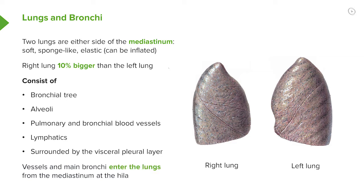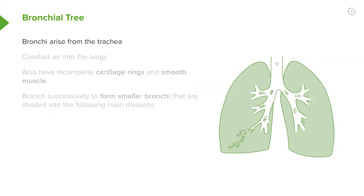All the vessels and all the bronchi — the right and the left main bronchi — enter the lung through what we call a hilum. These are gaps in the visceral pleura which are very medial, in the middle part of each lung. The bronchial tree arises from the trachea and conducts air into each lung. It also has incomplete cartilage rings just like the trachea does, although it's not a D shape — they're round instead.